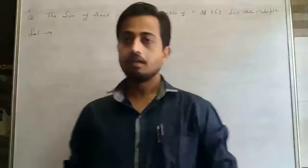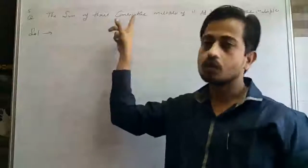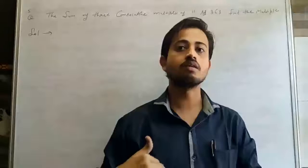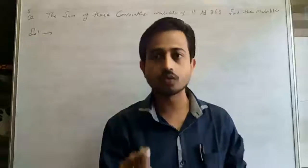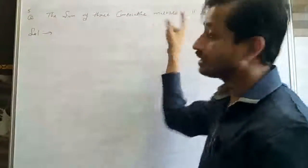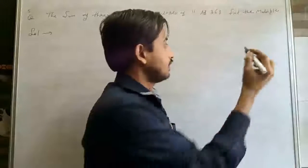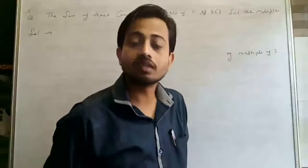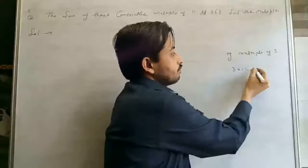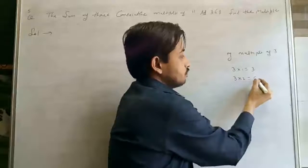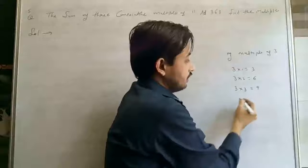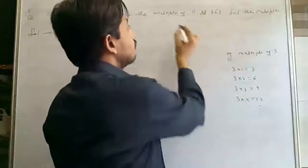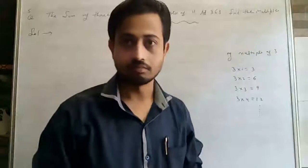Next example: The sum of three consecutive multiples of 11 is 363. Find the numbers. Consecutive multiples means multiples in continuous sequence. For example, multiples of 3 are 3, 6, 9, 12 — these are consecutive multiples. Here we need three consecutive multiples of 11, and we don't know the starting number, so we assume the first multiple of 11 is X.